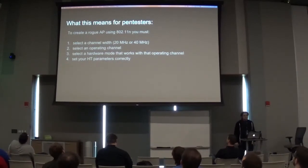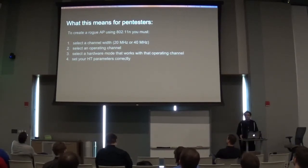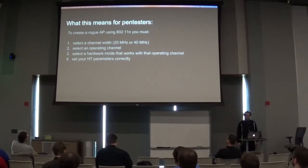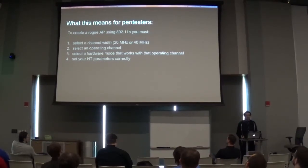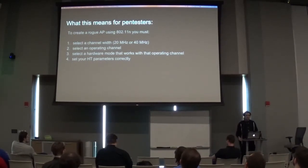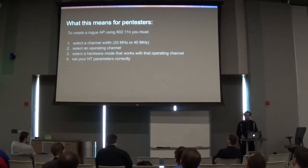What does all this mean for pen testers? If you're doing a rogue AP attack, you're essentially creating an access point from scratch using software. Just to think about what you have to do using 802.11n: you first have to select a channel width — 20 megahertz or 40 megahertz. Then you have to select an operating channel, then select a hardware mode that works with that channel — either A or B depending on whether it's 2.4 or 5 GHz. Then you have to set your HT parameters correctly. At this point the problem is already ballooning.